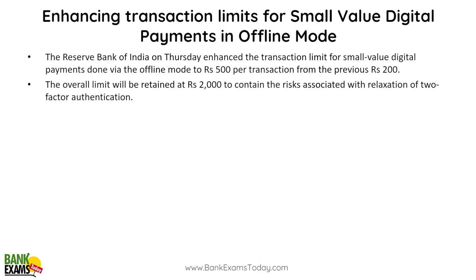Enhancing the transaction limit for small value digital payments in offline mode. You can make UPI transactions in offline mode — digital payments can be made offline. There used to be a limit of 200 rupees per transaction; now that limit has been enhanced to 500 rupees per transaction. You can do digital payments without internet up to 500 rupees per transaction. The overall limit is retained at 2,000 rupees per day — without two-factor authentication, there is a 2,000 rupee limit, with per transaction limit raised from 200 to 500 rupees.